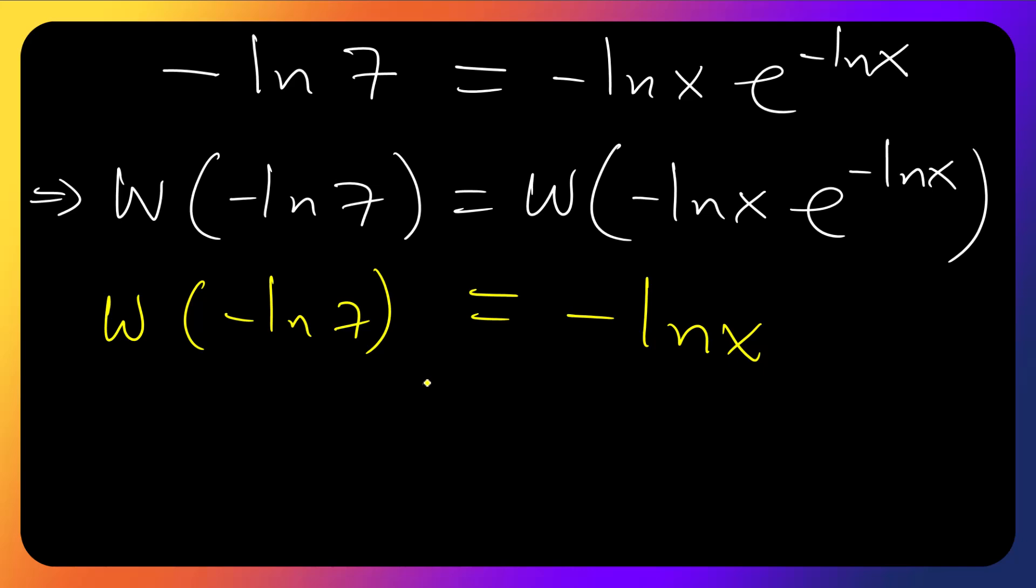Now let's do multiplication here. Remember, this is a power. It will be the same as W function of ln of 7 to the power minus 1. And this one is the same as x to the power minus 1. So I can say W function of ln of 1 over 7. Whereby this side with x equals ln of 1 over x.